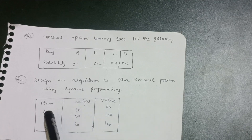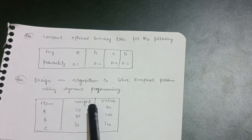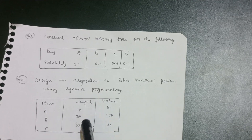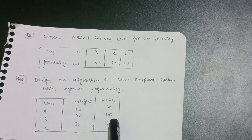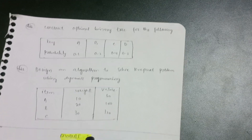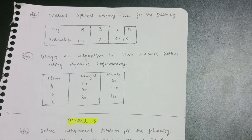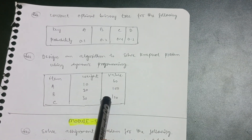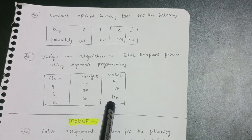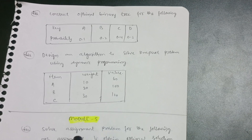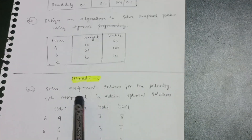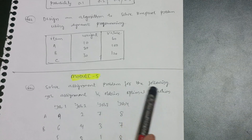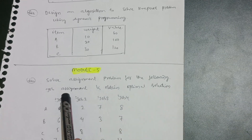Design an algorithm to solve the knapsack problem using dynamic programming — items A, B, C with weights and values given as {10, 20, 30} and {60, 100, 120}. This covers six important questions for Module 4.